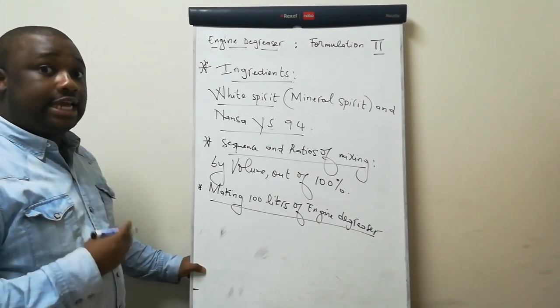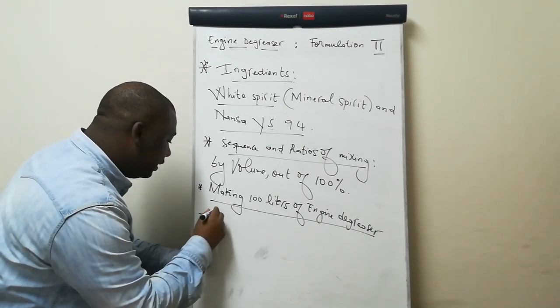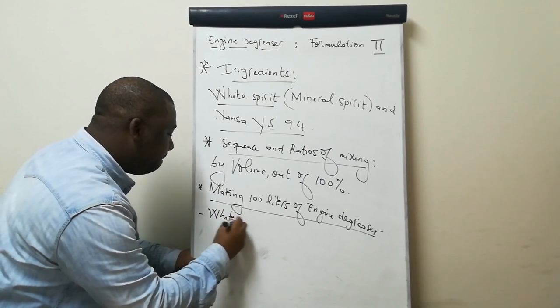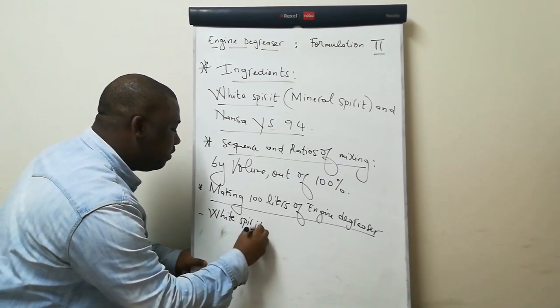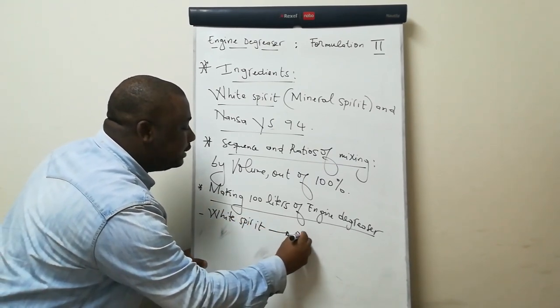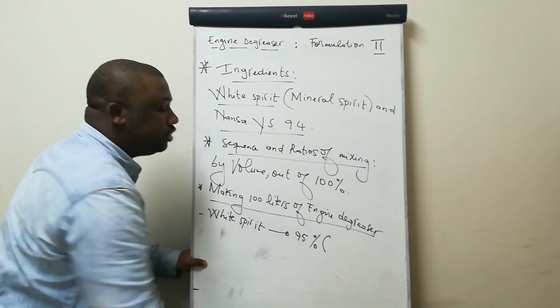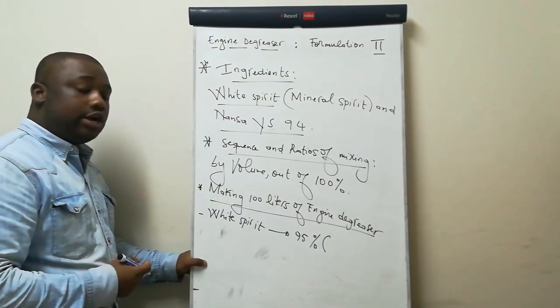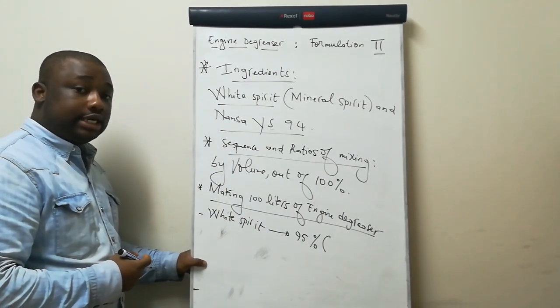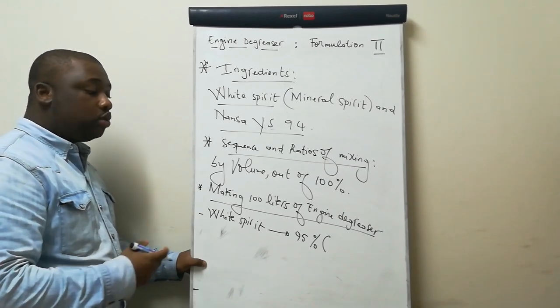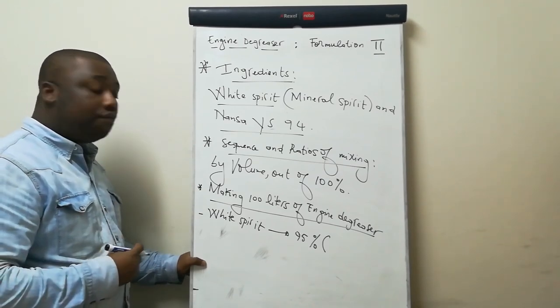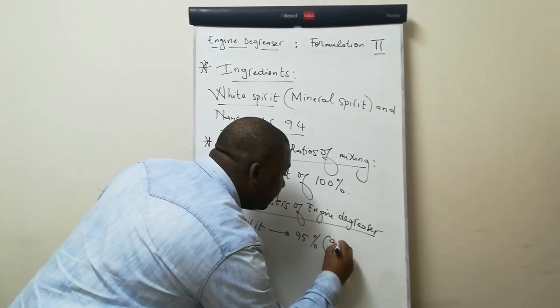The first ingredient to consider here is your White Spirit. White Spirit should be 95% of the total volume. Out of the 100 liters of engine degreaser that we're manufacturing, we need to consider 95 liters of White Spirit.